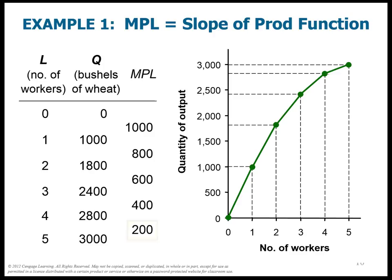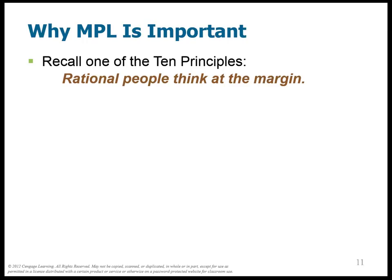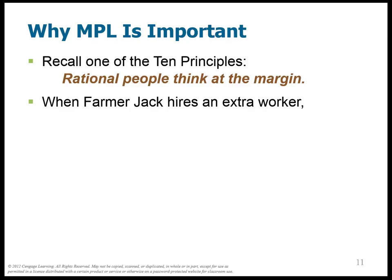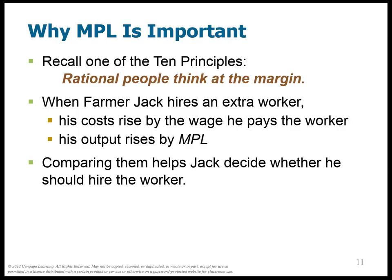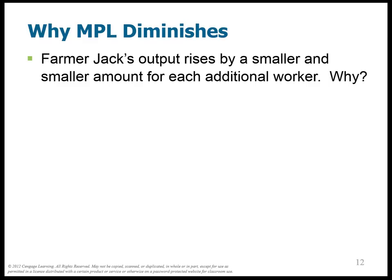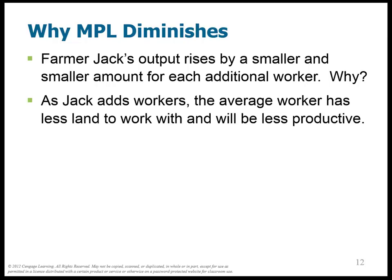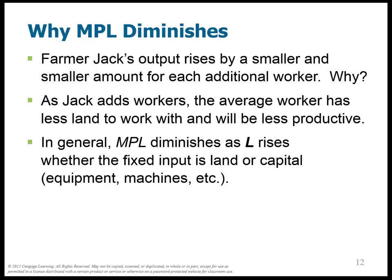Why is this important? We always want to make our decision at the margin. Farmer Jack will ask: when I hire one extra worker, my costs rise by the wage and my output rises by the marginal product of that laborer. He asks: is the worker's MPL worth more to me than the cost? If it is, he wants to hire the additional worker. Why does marginal product diminish? Basically, the farm is a set, fixed amount of land. The more people we have, the less land each individual worker has to be productive. Whether the fixed input is land or capital — perhaps a factory — there's only so much space, and as you pack more workers in, they have less room to work, so productivity diminishes. This only happens when there's a fixed input.